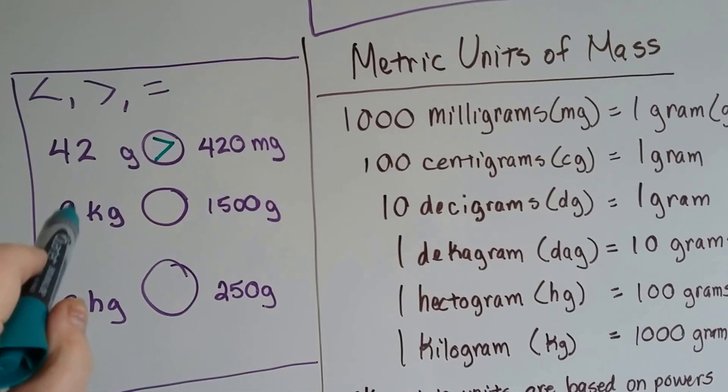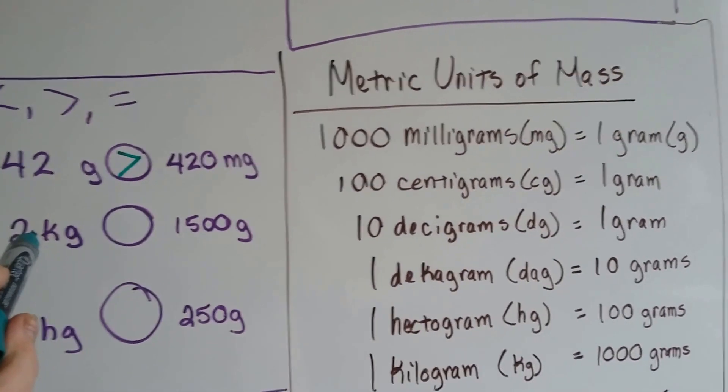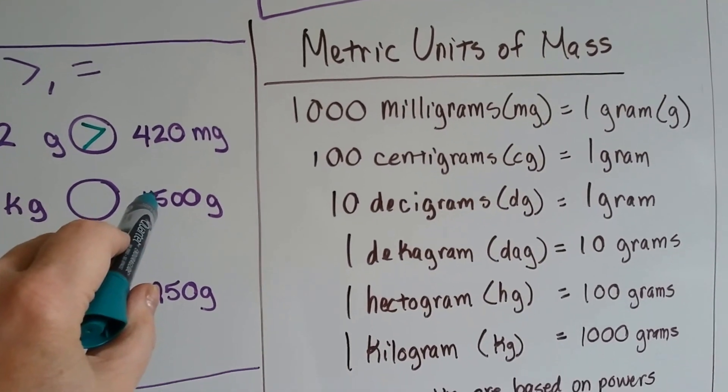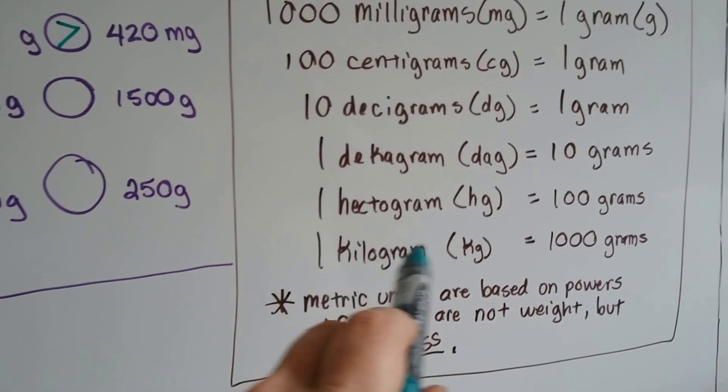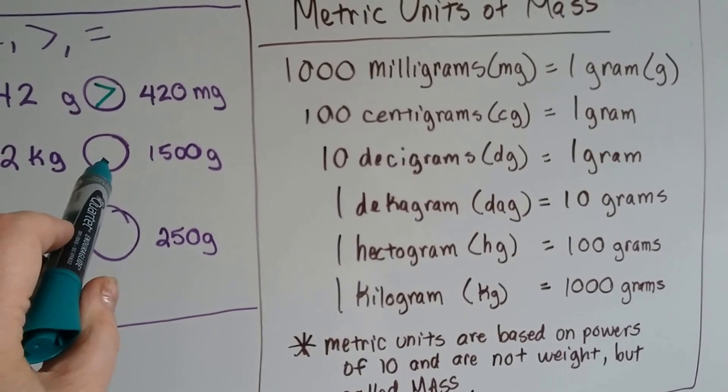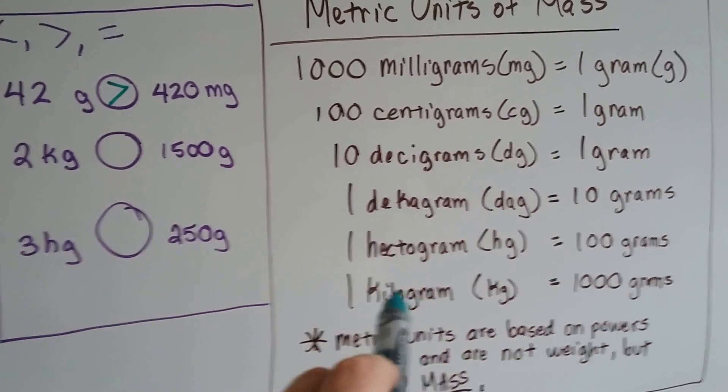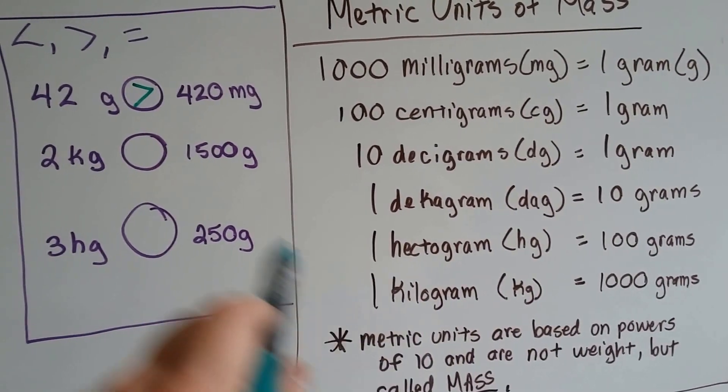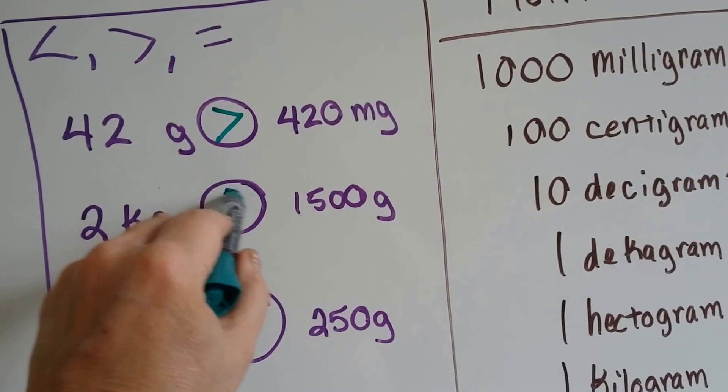Which is less than, greater than, or equal to? 2 kilograms or 1,500 grams? Well, 1 kilogram is 1,000 grams. So 2 kilograms would be 2,000 grams, wouldn't it? So the 2 kilograms is bigger.